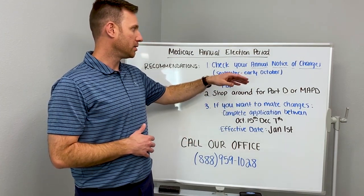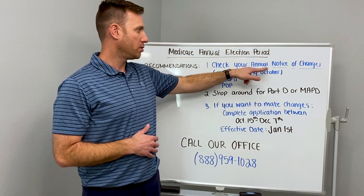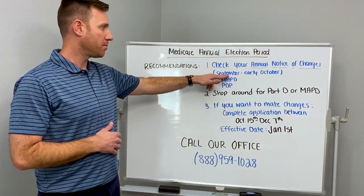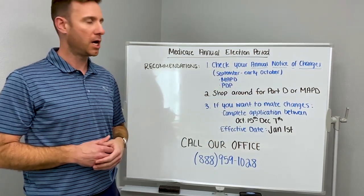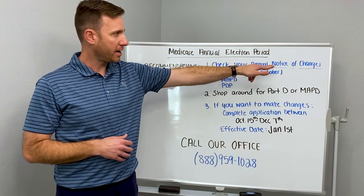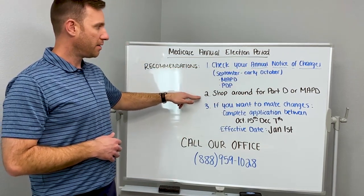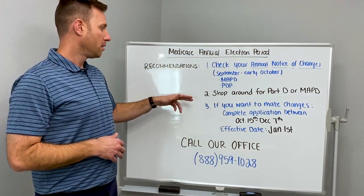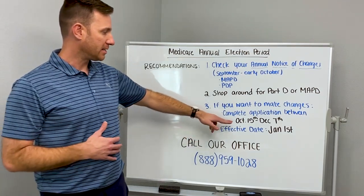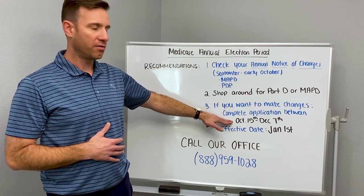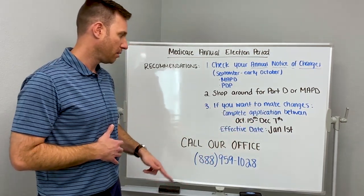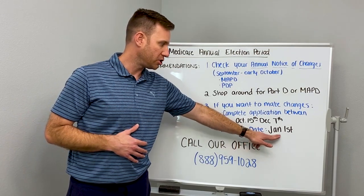First recommendation: look in the mailbox for an Annual Notice of Changes. This is a letter that's going to come in September to early October. If you have an MAPD plan or a prescription drug plan, be on the lookout for that. Once you get it, that's when you can shop around. If you are going to make a change, it has to be done during that time frame — you have to have an application in by December 7th for a January 1st effective date.